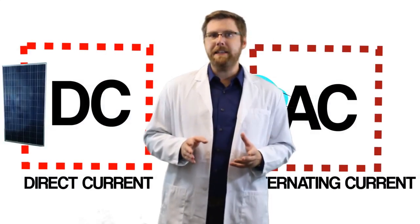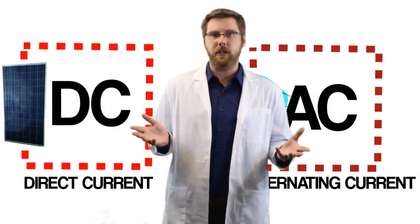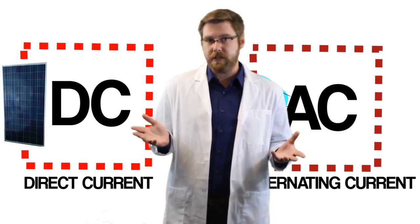What these components do is they take the DC current produced by the solar modules and turn it into AC current that's usable in residential and industrial applications. Charge controllers and battery banks can be used in off-grid applications to store electricity produced during the day for use at night.